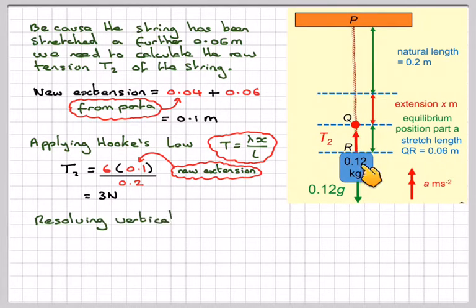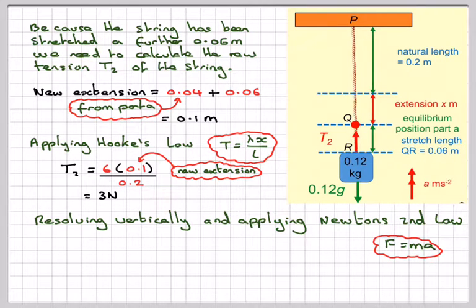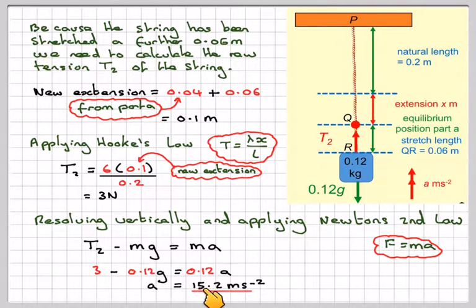Now, we've now resolved this, but remember it's not in equilibrium, we're going to let it go, so if we have to apply Newton's second law, which is F is equal to ma, F will be T2 minus mg is equal to m times a. So it's going to be 3 minus 0.12g is equal to 0.12 times a. A is what we're trying to calculate, so a will be equal to 15.2 meters per second squared when we initially release it.